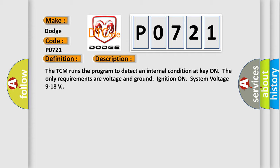The TCM runs the program to detect an internal condition at key on. The only requirements are voltage and ground ignition on, system voltage 9 to 18 volts.